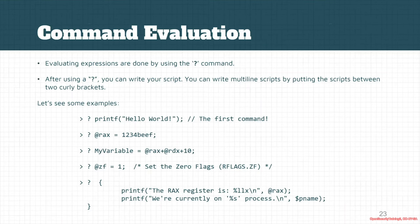For example, if you want to modify the zero flag — the ZF flag within RFLAGS — you can simply assign a bit value to it. This is really useful for flag manipulation directly in the script engine.